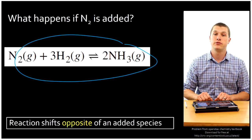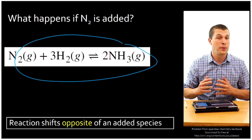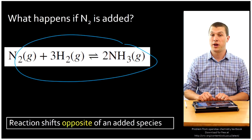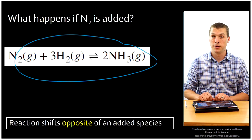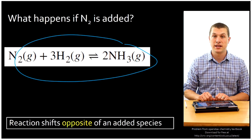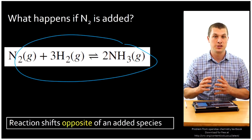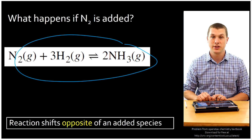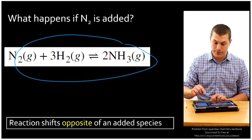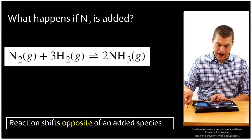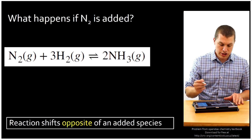We're going to go through a series of different perturbations you might do to your reaction at equilibrium, and think about what that does to our chemical species. That's Le Chatelier's principle. So let's look at what happens, for example, if we add nitrogen.